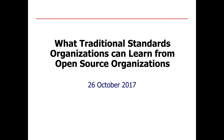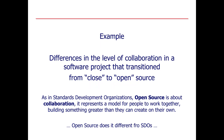My title for today is about what traditional standards organizations can learn from open source organizations. I'd like to start with open source. I'm going to give two slide examples of the difference in how open source collaborates versus a closed source model. The main purpose of open source organizations is collaboration — it represents a model for people to work together, building something greater than they can create on their own. And if you think about it, standards development organizations are exactly the same, but open source does it a little bit differently.